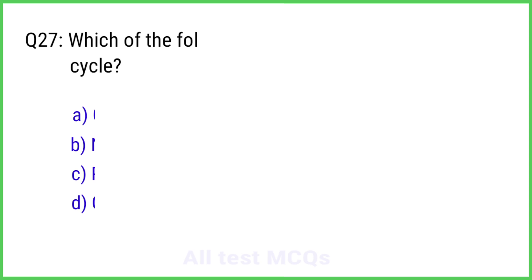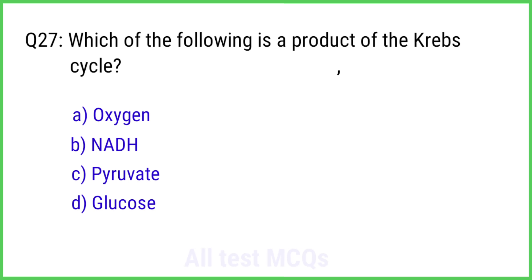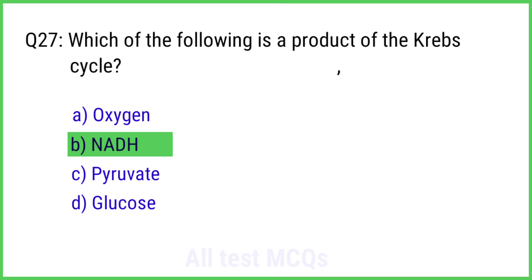Question No. 27. Which of the following is a product of the Krebs cycle? The right answer is Option B: NADH.